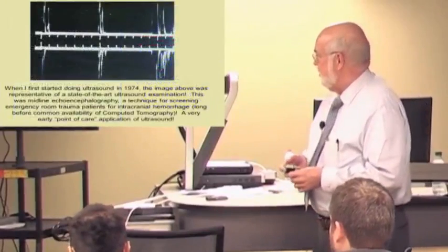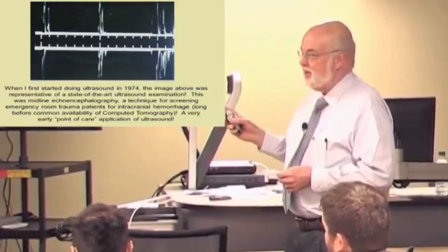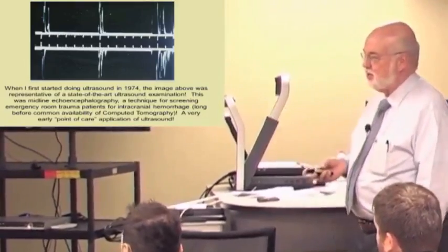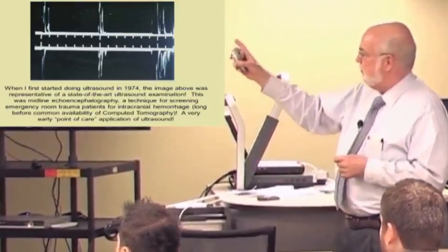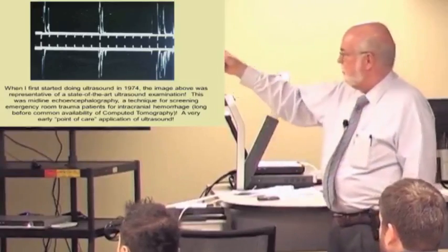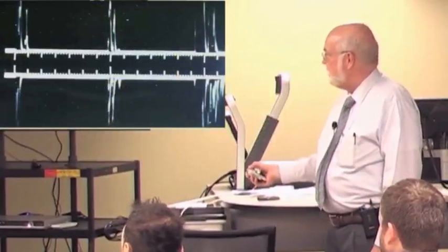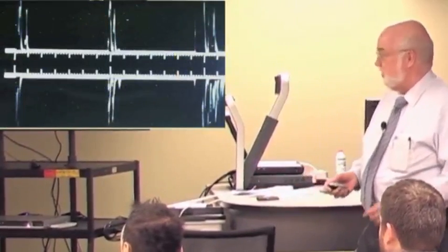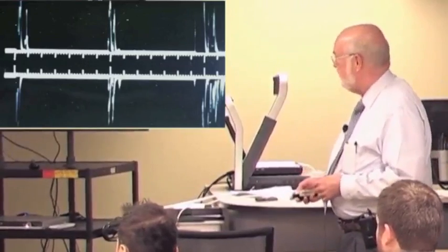Now when I started doing ultrasound in 1974, that was an ultrasound. We didn't have images. They didn't look like anything. There were these spikes on an oscilloscope. They were purely used to measure distance to some structure. This is actually measuring from the skull surface to the midline. This is a third ventricle in here and then that's the far side of the skull and the hair on the other side. So ultrasound has come a long way in the length of time that I've been fortunate enough to be involved with it.